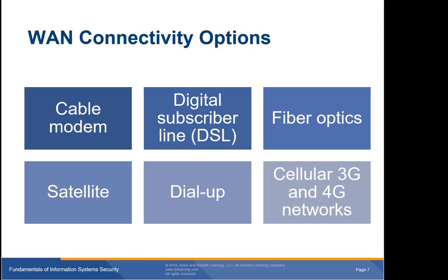As internet use increases, ISPs add more choices to connect. The number of available options depends on where you live, with more densely populated areas tending to offer more options. You can also connect through a wireless carrier. Advances in wireless technology make cellular connections affordable in many areas. Smartphones generally connect to 3G, 4G, or 5G networks, and many devices also connect to Wi-Fi networks using 802.11 standards.